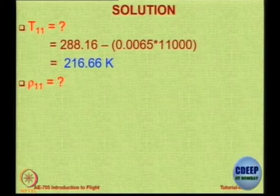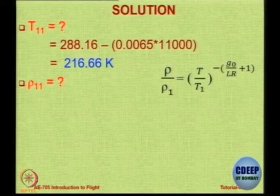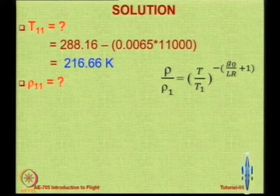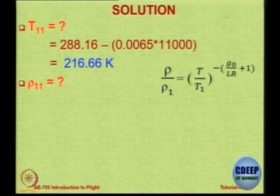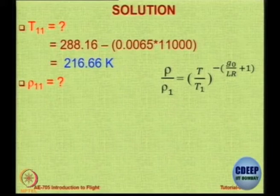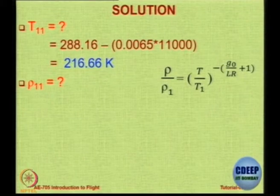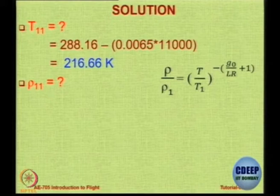The density ratio is (T/T₀) to some power. Here is the formula: ρ/ρ₁ = (T/T₁) raised to a power, noting there is a negative sign in the exponent, plus L is the lapse rate which is also −0.0065. R is 287 J/(kg·K), L is 0.0065, and G0 is 9.807.